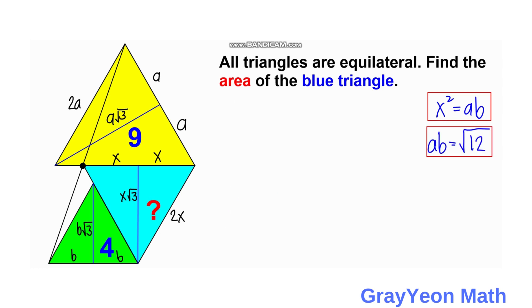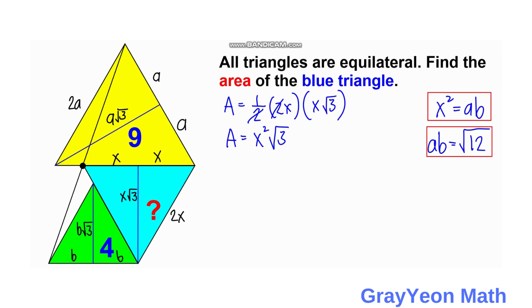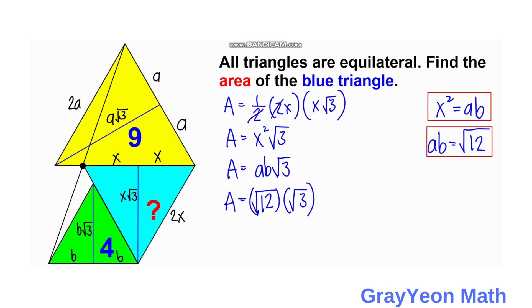Next, we focus on the area of the blue triangle. The area equals one half times the base 2X times the height X square root of 3. Simplifying, area equals X squared times square root of 3. Since X squared equals AB, area equals AB times square root of 3. Substituting AB equals square root of 12, we multiply square root of 12 by square root of 3. Since they share the same radical, area equals square root of 36, which equals 6 square units.